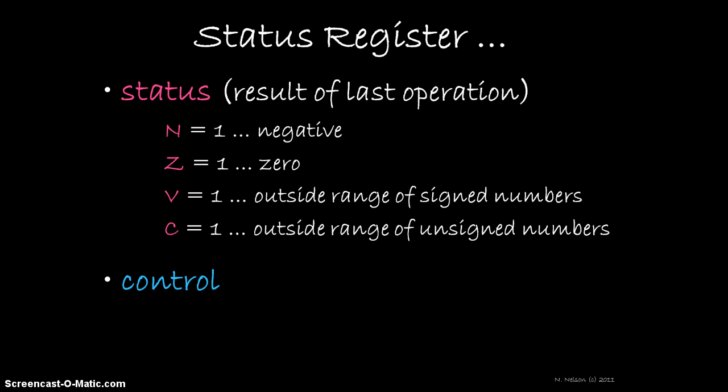A few of the bits in the status register are used to control system events. Most commonly, these bits are used to enable or disable system interrupts.